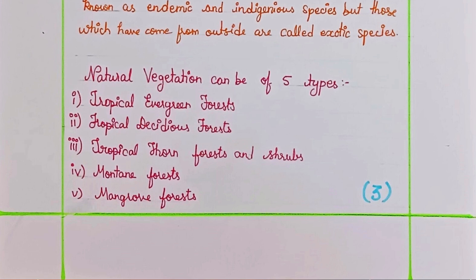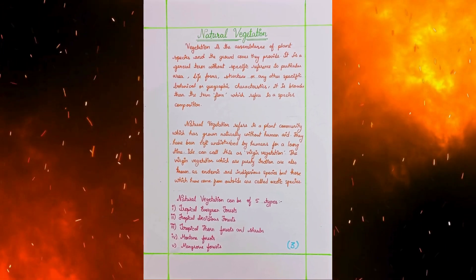The five types of natural vegetation are: Tropical Evergreen Forest, Tropical Deciduous Forest, Tropical Thorn Forest and Shrubs, Montane Forest, and Mangrove Forest.